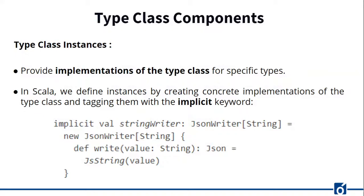The second component of type class is the type class instances. The instance of a type class provides implementation of the type class for specific types we care about — which can include types from the Scala standard library and types from our own domain model. In Scala, we define instances by creating concrete implementations of the type class and tagging them with the implicit keyword — these are known as implicit values. For example, this is our type class instance for type String, implementing the JSONWriter type class using the implicit keyword.